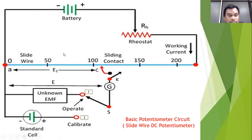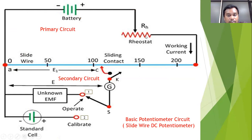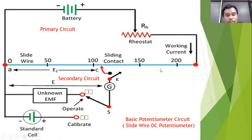The basic potentiometer has two circuits: the first is the primary circuit and the second is the secondary circuit. In the primary circuit, the components are: a battery, an external variable rheostat (RH), and a slide wire having a uniform cross section and a length of 200 centimeters. It is made with manganine or punch. The cross section should be uniform so that the resistance is uniform at every point.